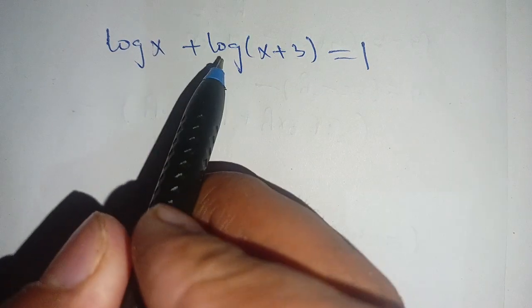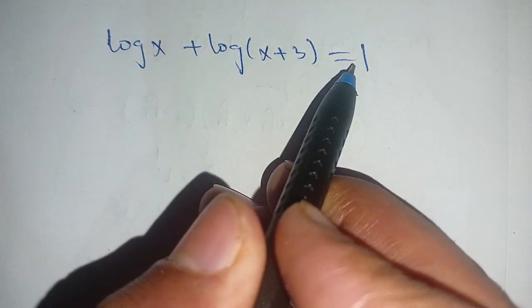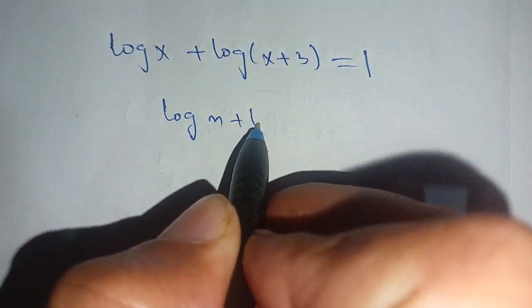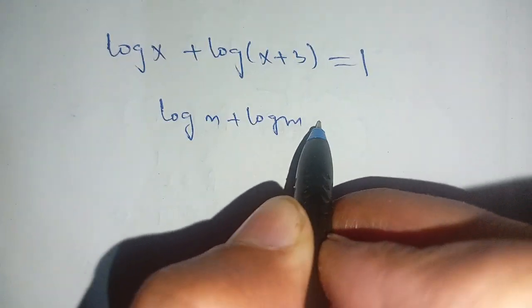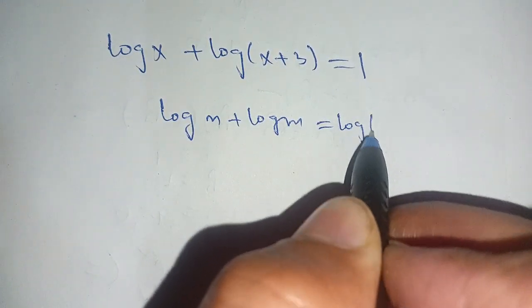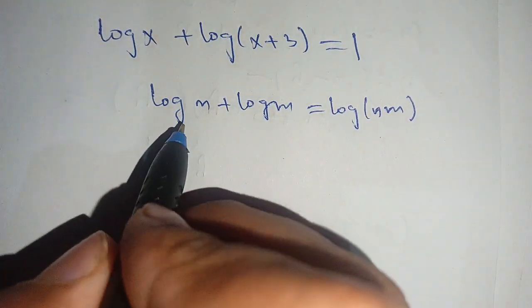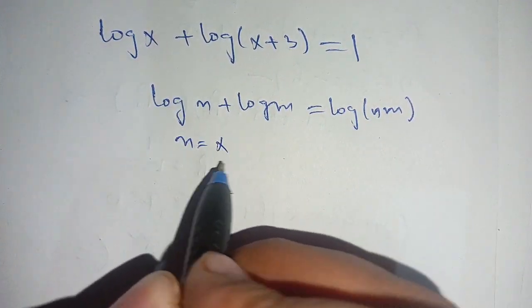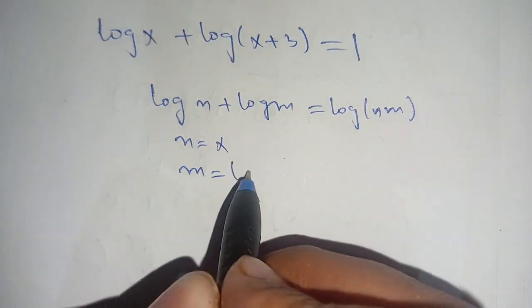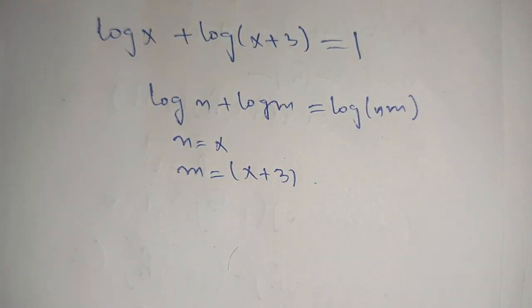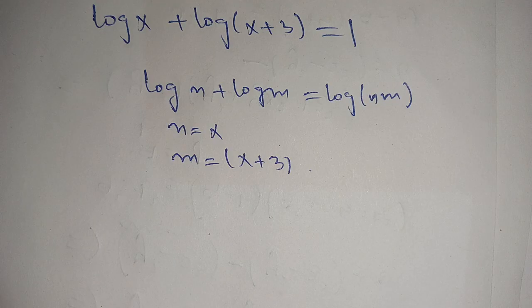How to solve log of x plus log of x plus 3 is equal to 1. Let us solve this. We know that log of n plus log of m is equal to log of n times m. And here n is equal to x and m is equal to x plus 3.